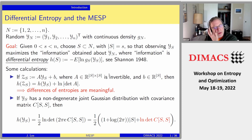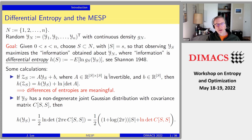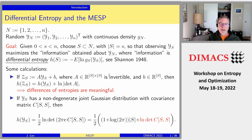The nice thing we'll mainly concentrate on is when y has a joint Gaussian distribution. In this case, the entropy up to some constants is just the logarithm of the determinant of the principal submatrix of the covariance matrix. We have a positive semi-definite matrix C as the covariance matrix. If we want the entropy of a subset S, we look at the principal submatrix indexed by S and take its log determinant — up to some constants, the entropy is just log-det of this principal submatrix.